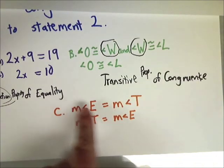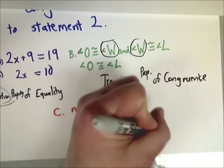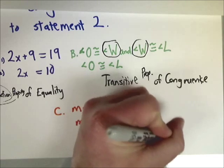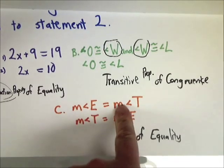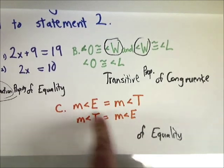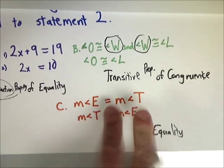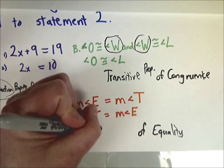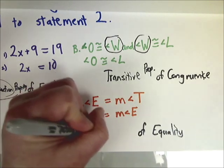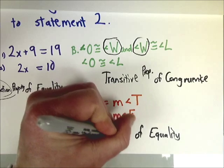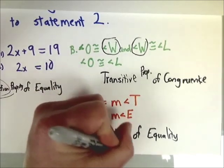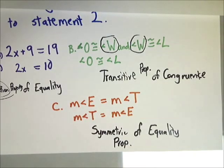The last example is a property of equality. The measurement of angle E equals the measurement of angle T, and the measurement of angle T equals the measurement of angle E - they're just the same thing flipped over. That's the symmetric property of equality. Very simple - you'd think it'd be harder, but it really isn't.